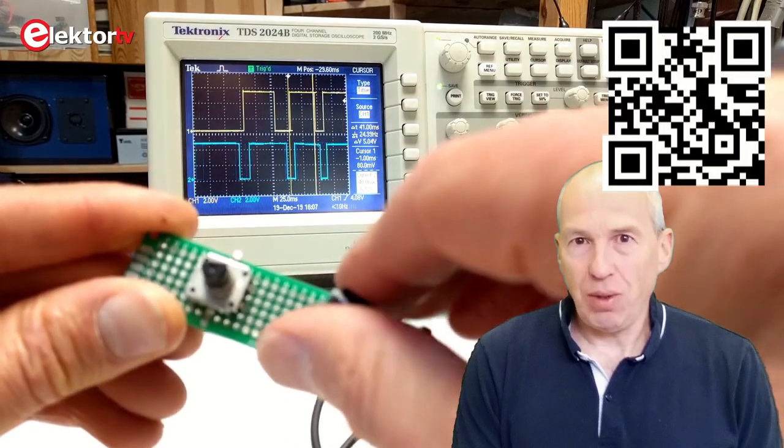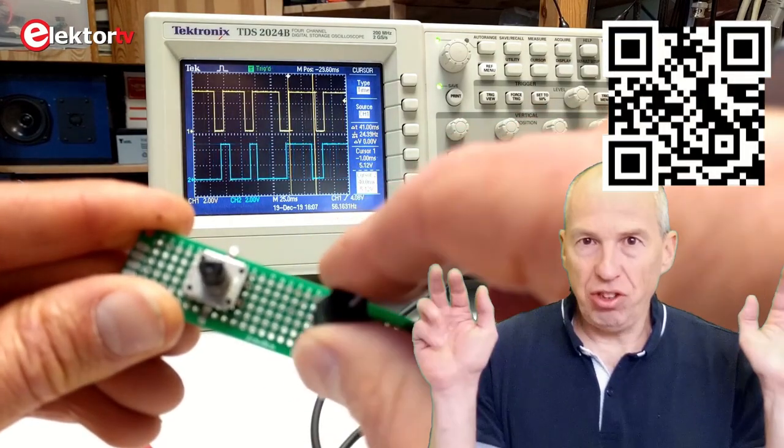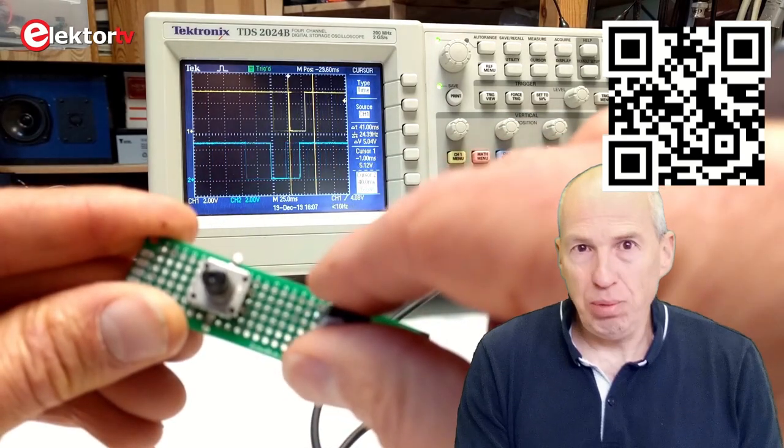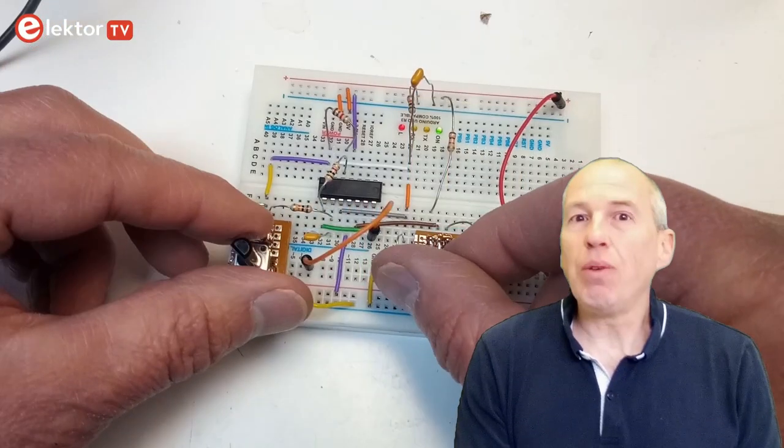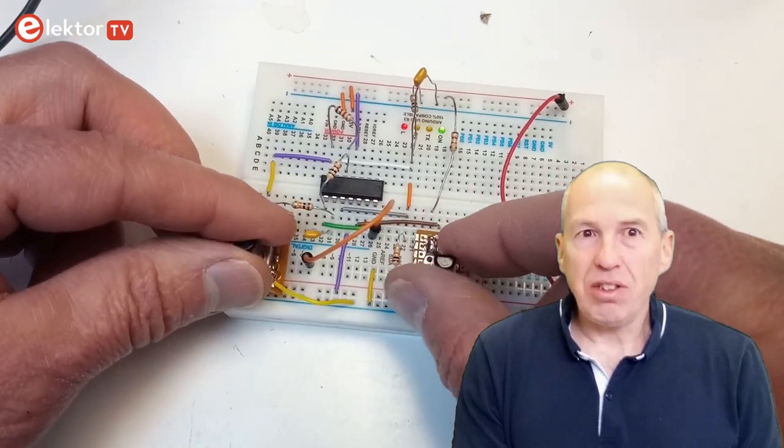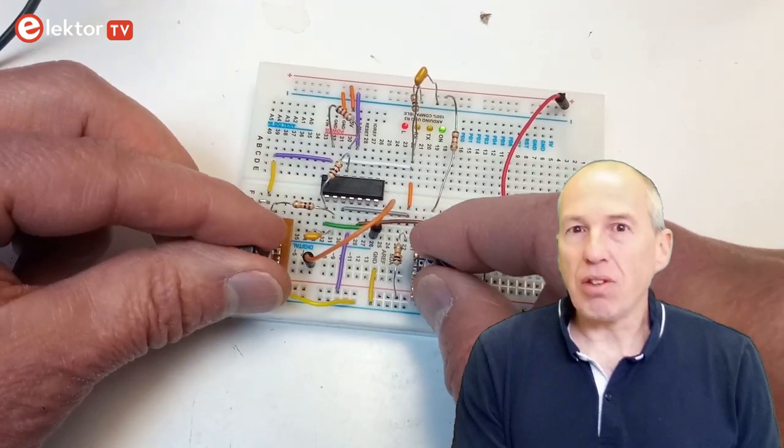In a previous video I showed the way how to connect two digital rotary encoders to a microcontroller using only one analog input pin. In this video I will do the opposite, sort of, as I will connect two analog potentiometers to one digital input of a microcontroller.